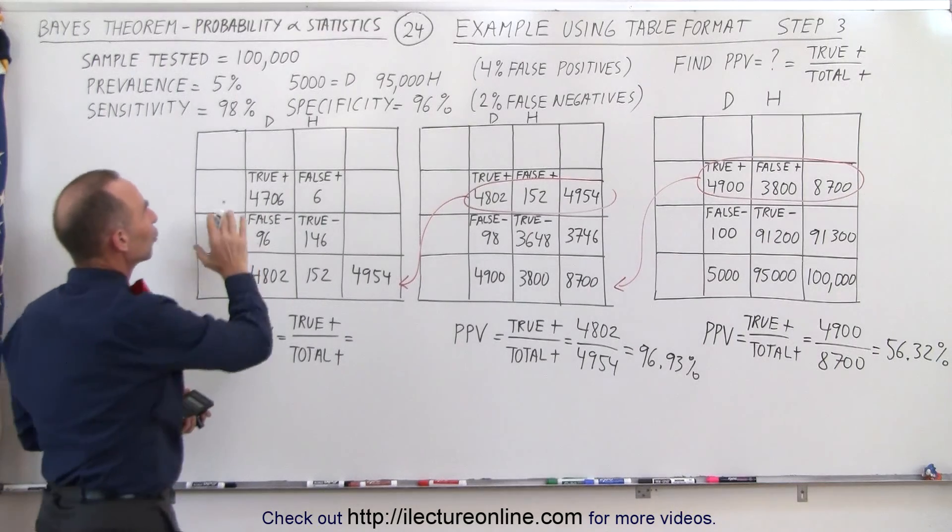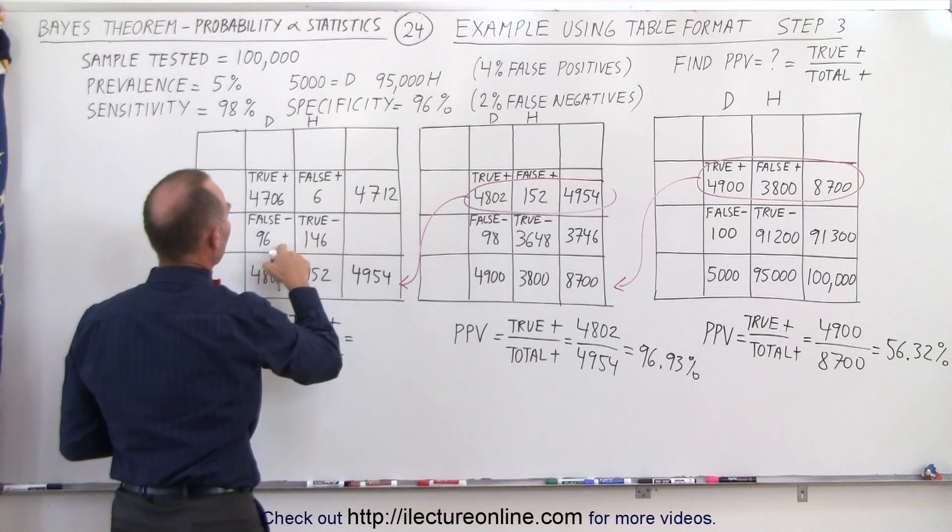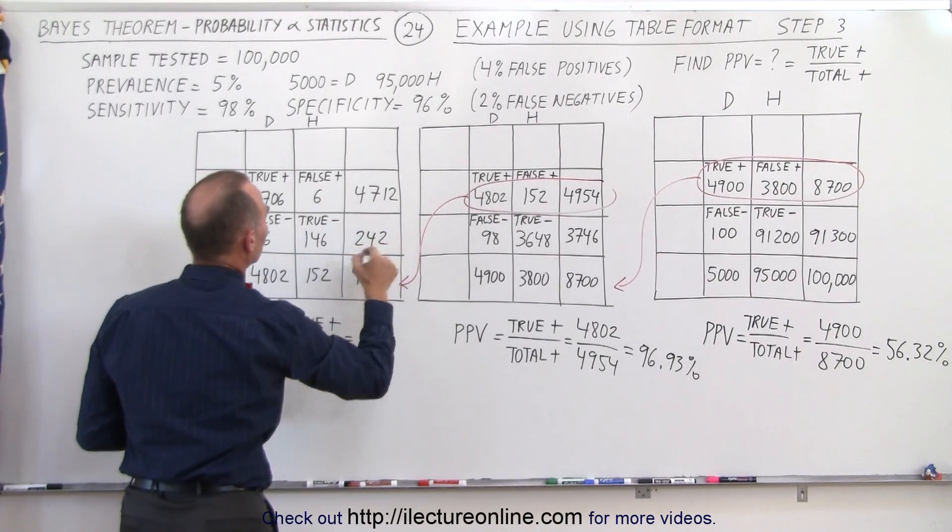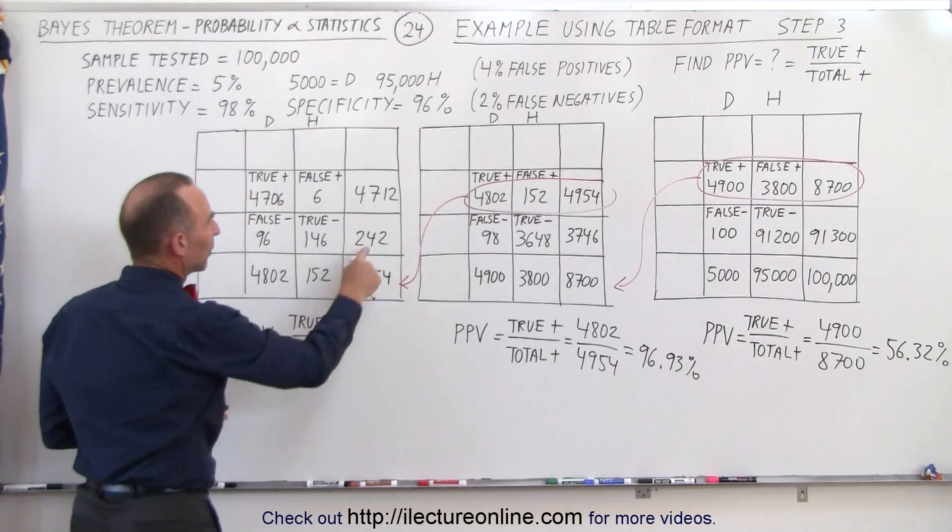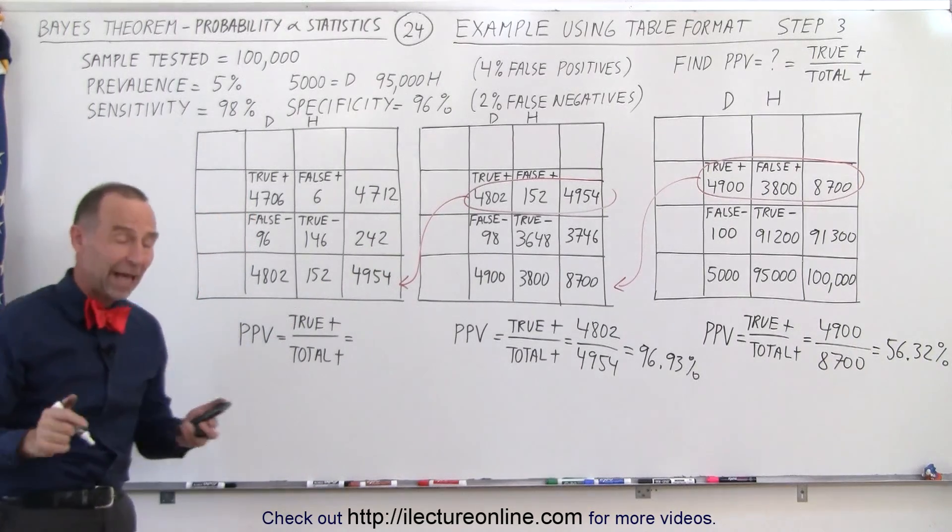All right, that means that a total of 4,712 will test positive and the total—add this to this—that would be 242 will test negative. When we add these together we get 4,954. That's correct. So everything seems to add up.